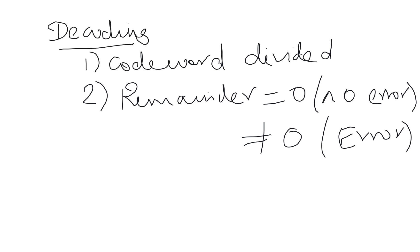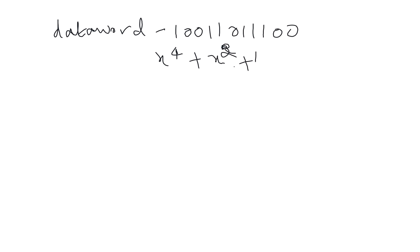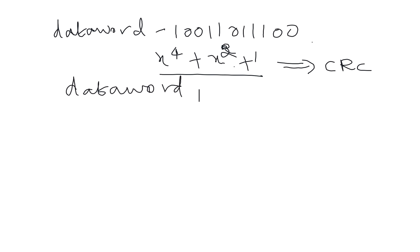I will give you one example. The data word given is 1 0 0 1 1 0 1 1 0 0, using polynomial x power 4 plus x square plus 1 — check for CRC. This polynomial is your divisor, and the binary sequence is your data word. The data word is not in polynomial form, so first represent the data word in polynomial form: 1 0 0 1 1 0 1 1 0 0.